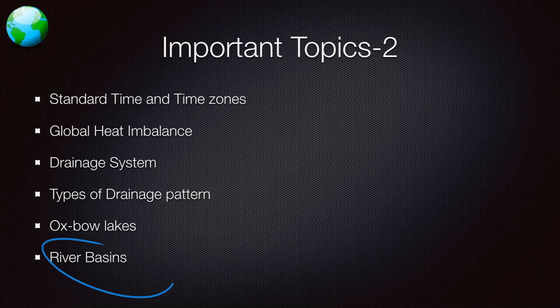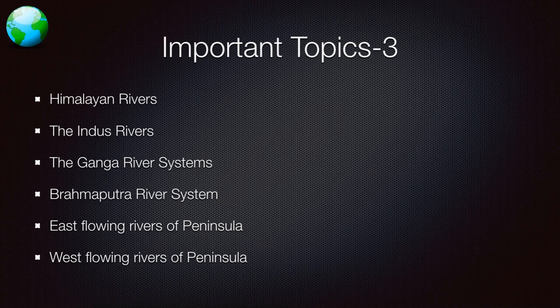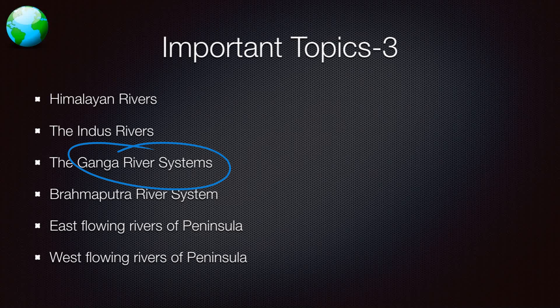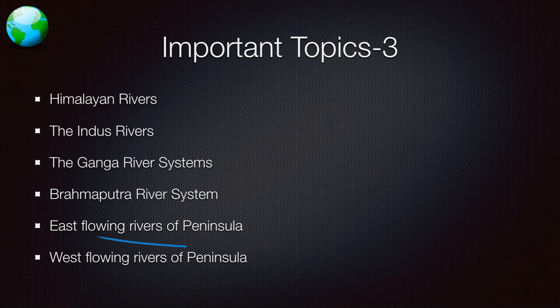Then there are oxbow lakes — what is an oxbow lake, you need to remember these kinds of terms. River basins — what is a river basin. Then Himalayan rivers and Deccan rivers, the Ganga river system. There are a lot of river systems in India: the Brahmaputra river system near Arunachal, east-flowing rivers of the peninsula and west-flowing rivers.